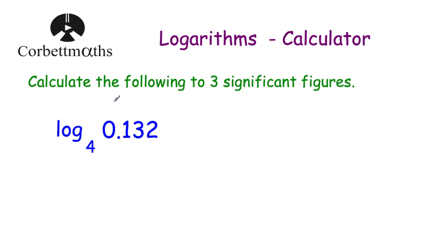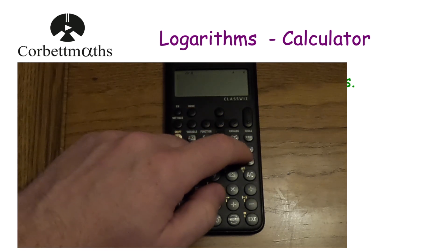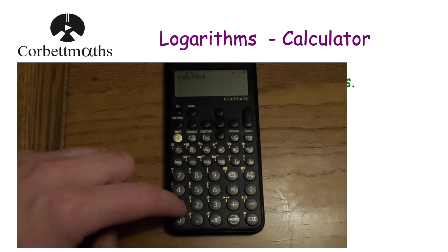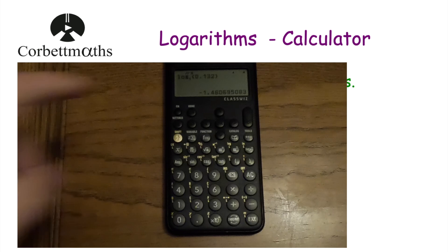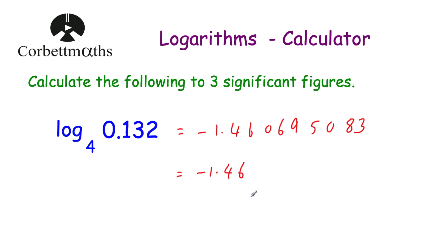Let's look at one more question: calculate the following to three significant figures — log to base 4 of 0.132. We're saying what power do we raise 4 by to get 0.132? Since 4 to the power of 0 is 1 and 0.132 is below 1, it's going to have a negative power. We press our log button, set the base to 4, go across to 0.132, and press equals. The answer is negative 1.460695083. To three significant figures, that's minus 1.46.